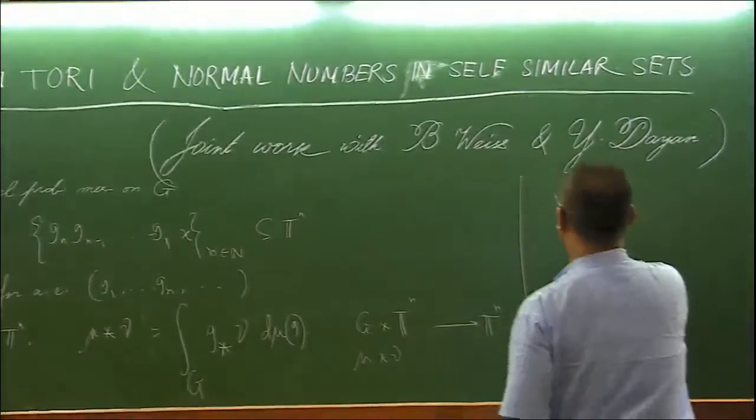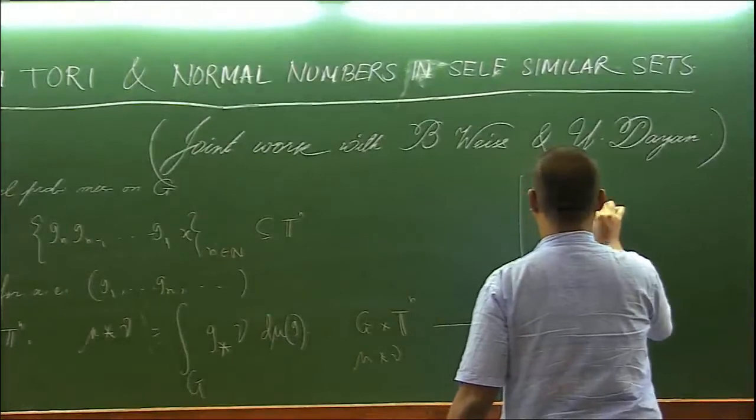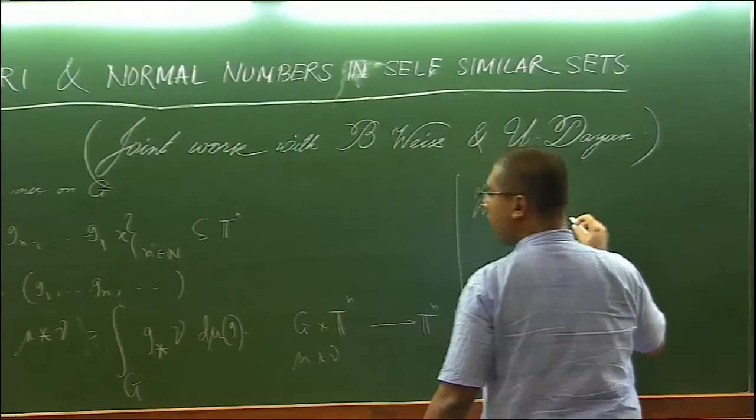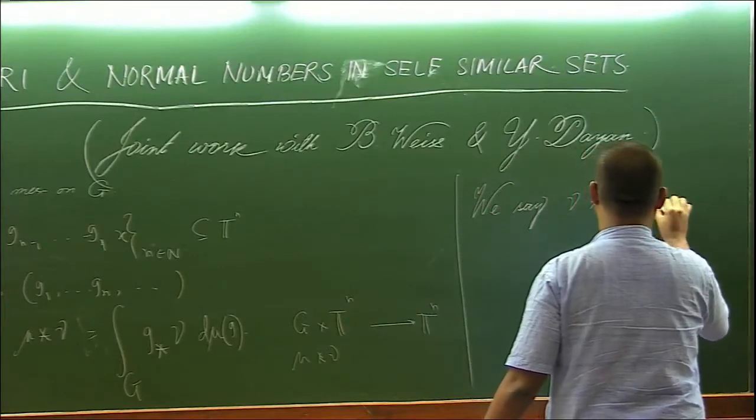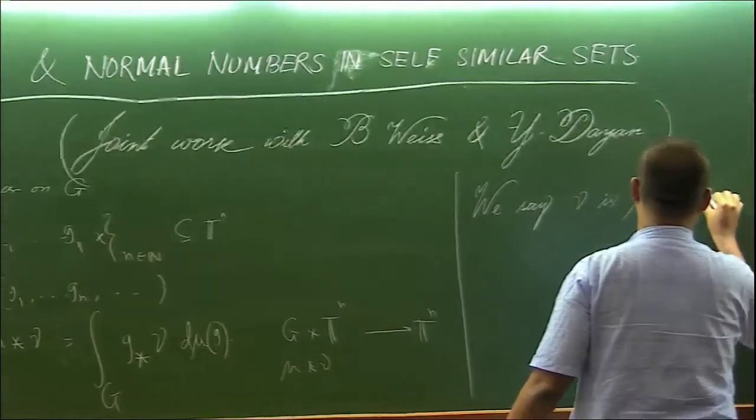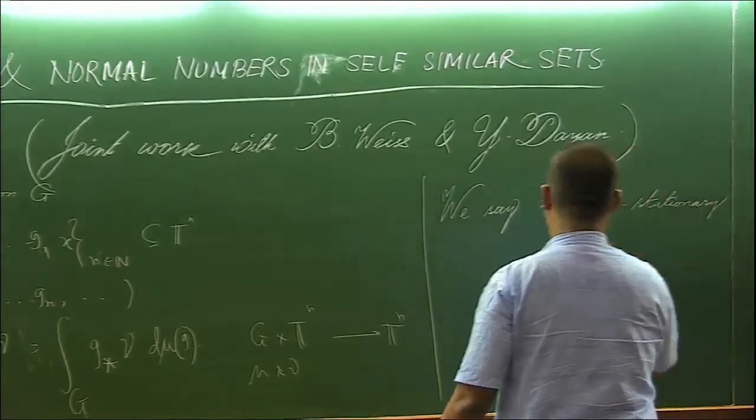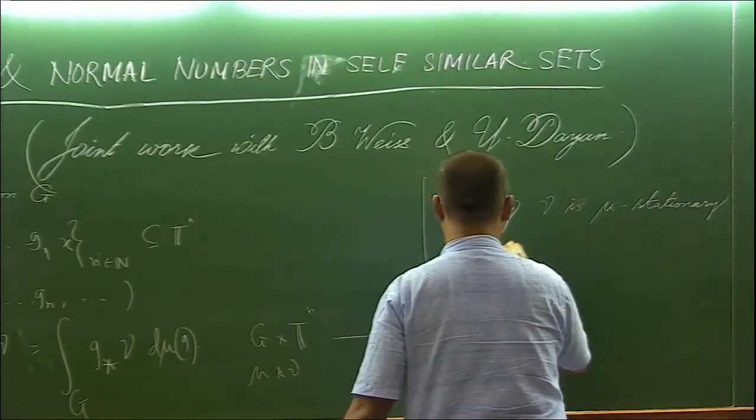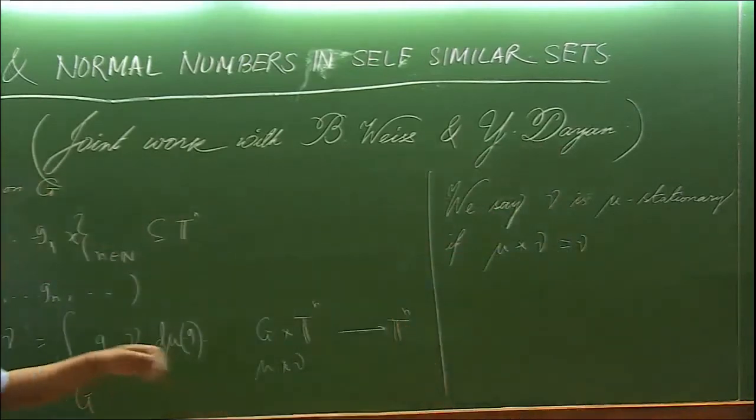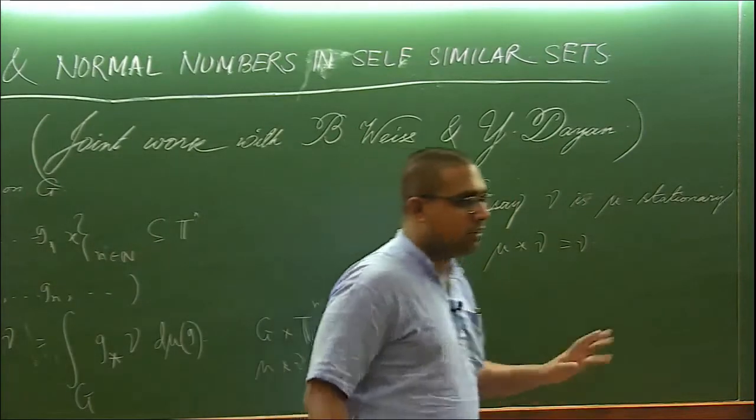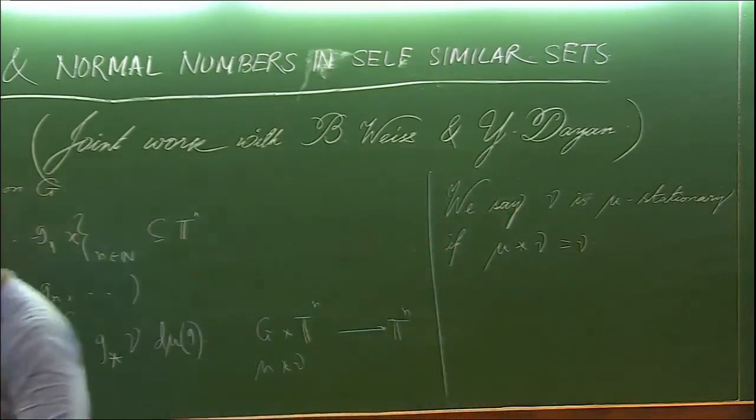We say nu is mu stationary if mu star nu equals nu. Clearly all mu invariant, in particular G invariant measures are mu stationary, but the converse doesn't hold. In fact, there have been some new results.